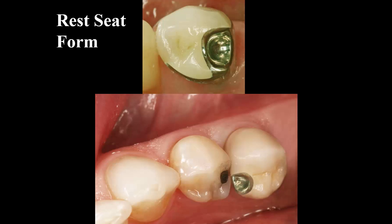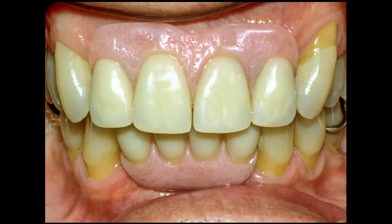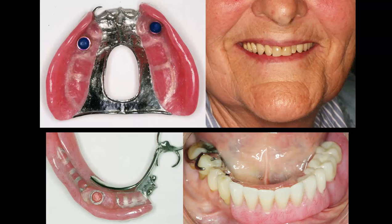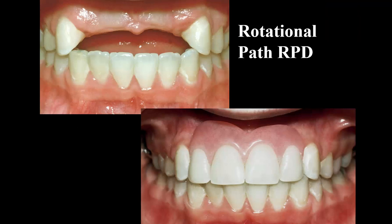There are hundreds of clinical pictures showing a variety of things, from rest seats to different clasp assemblies, to different bases used, as well as implants used below the bases of removable partial dentures, and a series of pre- and post-treatment pictures to show nice results.